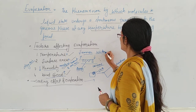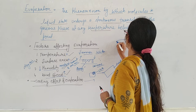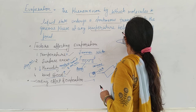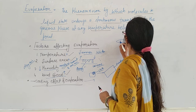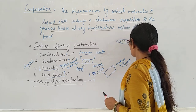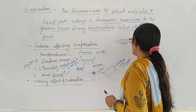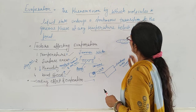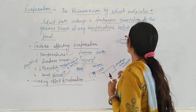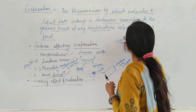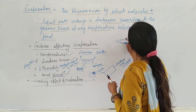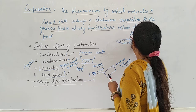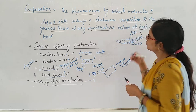For example, you have a container with a droplet of liquid. When evaporation occurs, the liquid molecules convert into gas. But how do they convert into the gaseous state? They absorb heat from the surroundings. They absorb the surrounding heat, and after absorbing the heat, the molecules change into the gaseous phase.